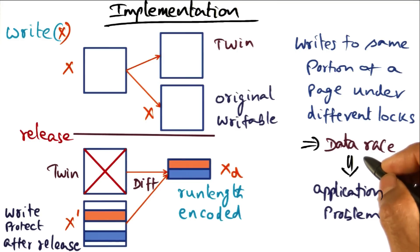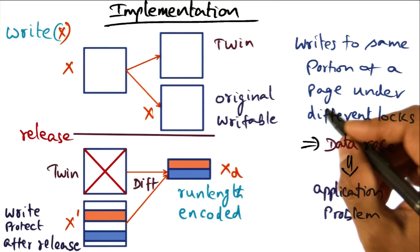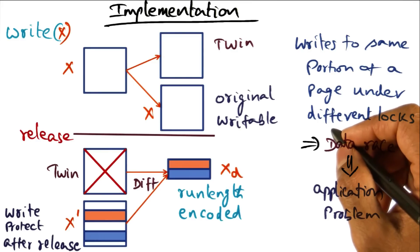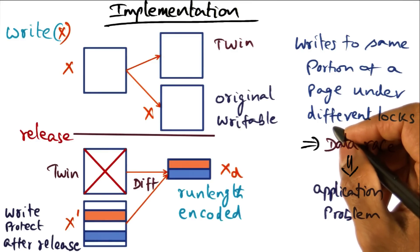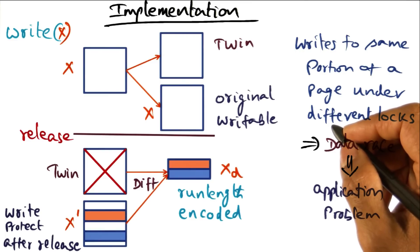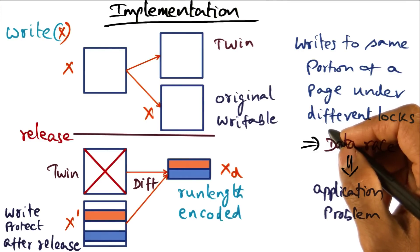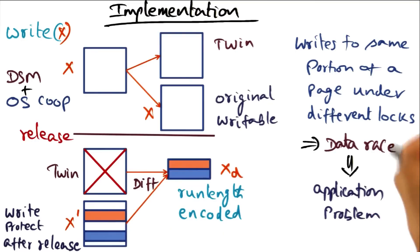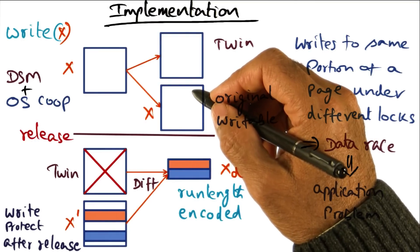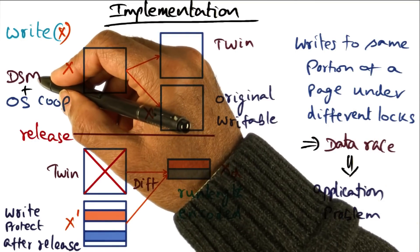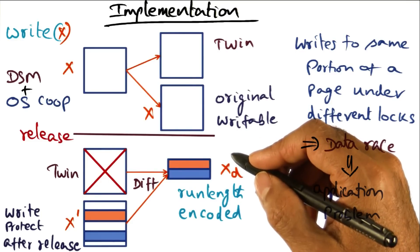But if the application is constructed correctly and multiple data structures are hosted in the same page, and the data structures are all governed by different locks, the DSM software has a way of ensuring that changes made to a critical section under a particular lock are propagated from one processor to the next, where the first processor is the current owner of the lock and the next processor is the next user of the lock. This implementation is an example of the cooperation between the distributed shared memory software and the operating system to make it all happen.